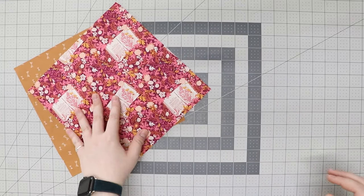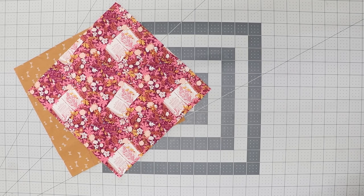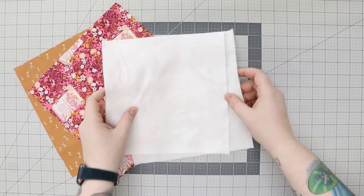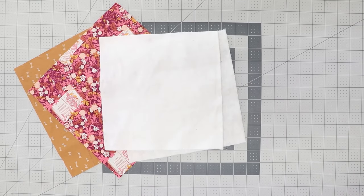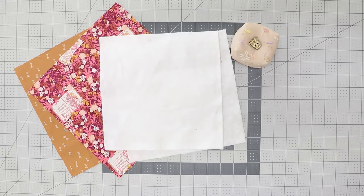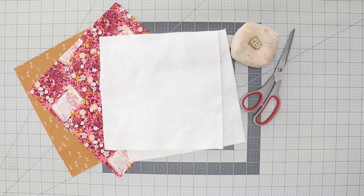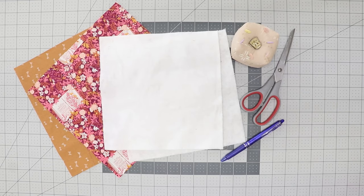For this project you will need two coordinating 10 inch squares of fabric and two 9 inch squares of batting. Today we are using two prints from my recent collection Bookish from Sharon Holland. And of course you're going to need some pins and a fabric pen and let's not forget the scissors. So let's get started.